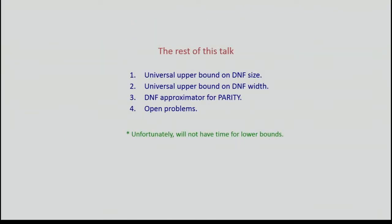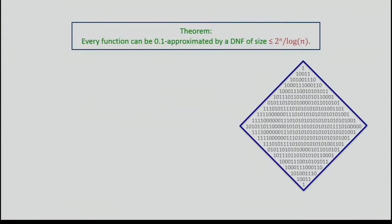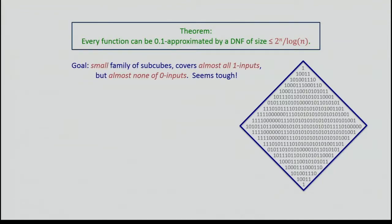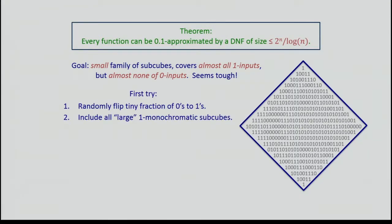Let me prove our first result: every boolean function can be 0.1-approximated by a DNF of size at most 2^N / log N. Our goal is to place a small family of subcubes — of size 2^N / log N — that covers almost all one inputs but misses almost all zero inputs. Here's the first naive attempt. First, randomly flip every zero input to one with some tiny probability. Then, put down every large one-monochromatic subcube. This controls error on zeros well, and any one input covered by many large subcubes is likely covered after corruption — but DNF size is the problem.